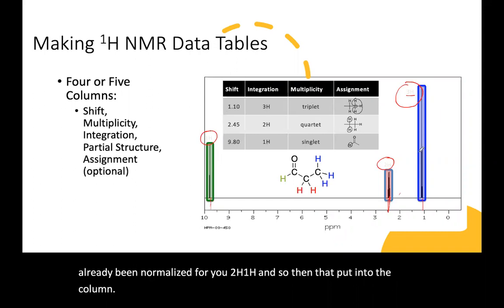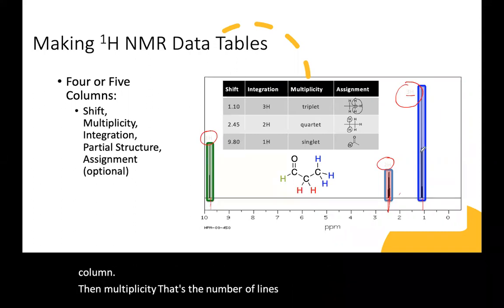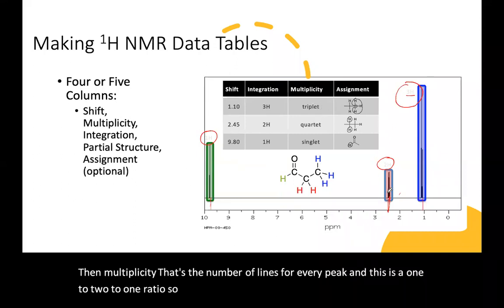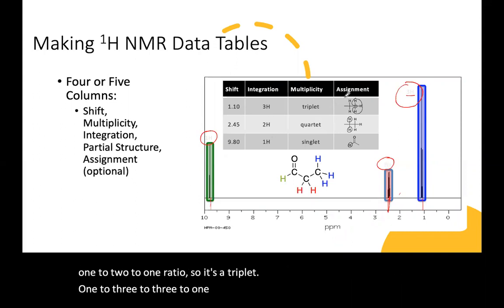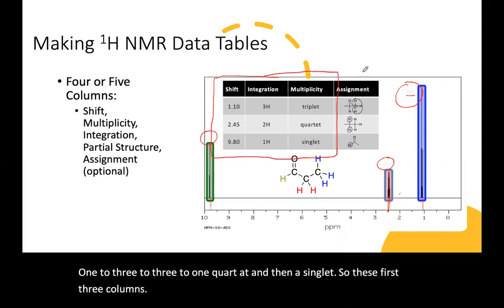Then multiplicity, that's the number of lines for every peak. And this is a 1 to 2 to 1 ratio. So it's a triplet. 1 to 3 to 3 to 1, quartet, and then a singlet.